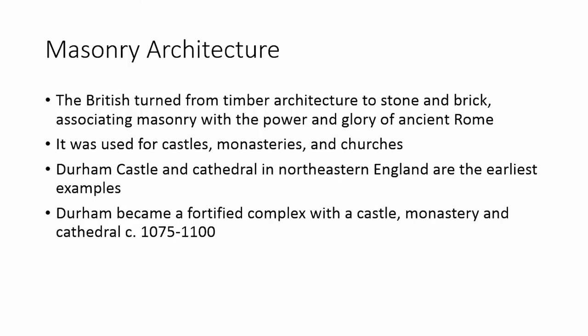The British turned from timber architecture to stone and brick because they associated masonry with the power and glory of ancient Rome. They used it for castles, monasteries, and churches. We have two very early examples in northeastern England: Durham Castle and Durham Cathedral. Durham became a fortified complex with a castle, monastery, and cathedral starting around 1075 to 1100. It's also a World Heritage site.